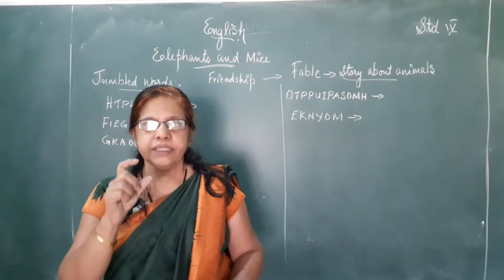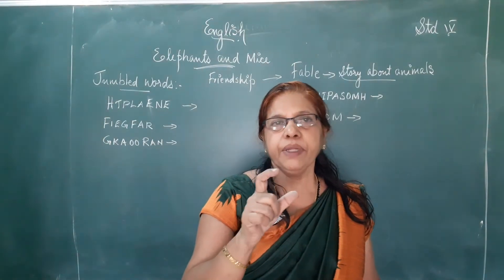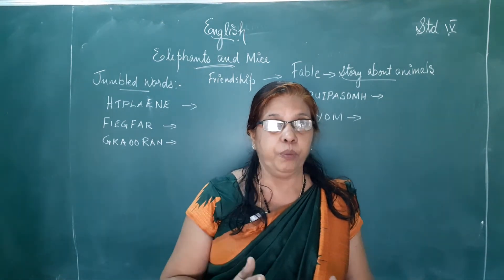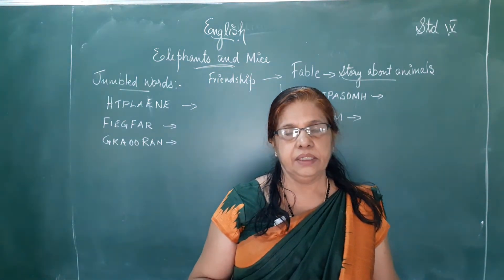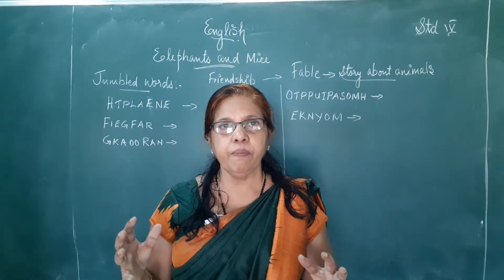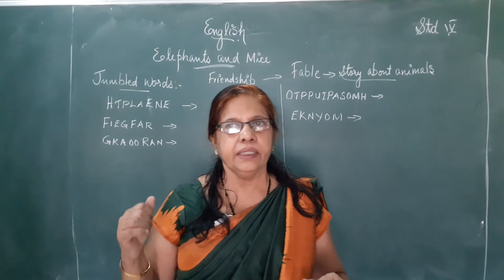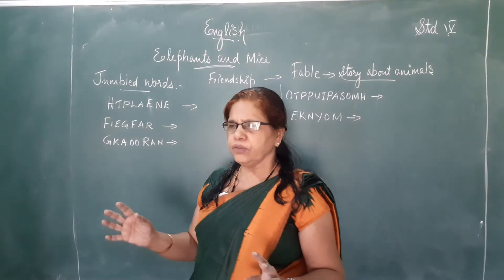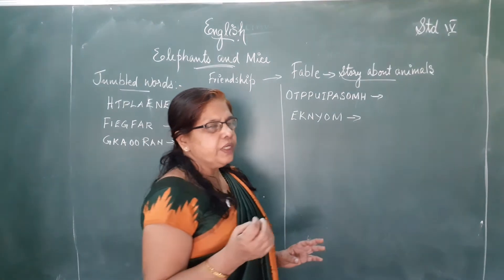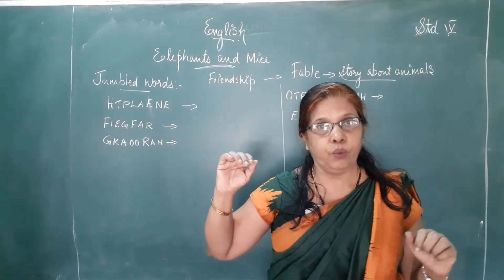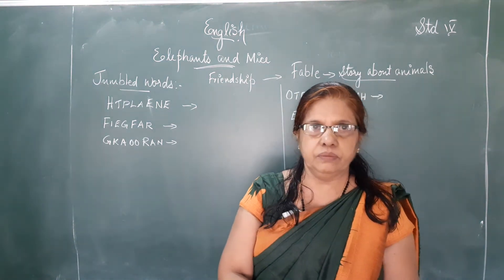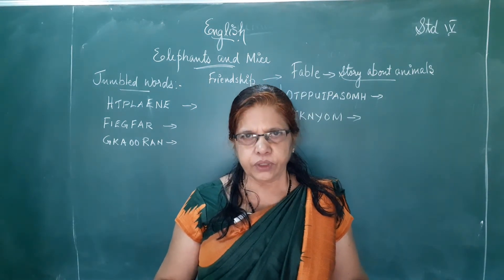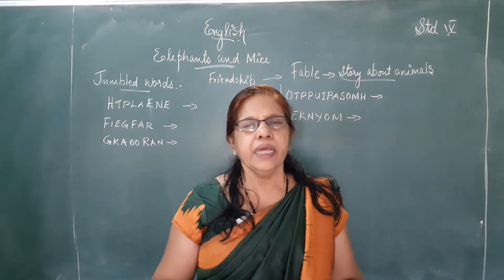I will tell you the summary of the story. The elephants come in a group — we call it a herd of animals. Once the elephants were coming through the land. They are very, very big, and the mice are very small. Elephants have very tiny eyes and it is very difficult for them to look down.